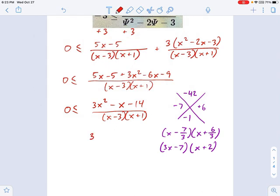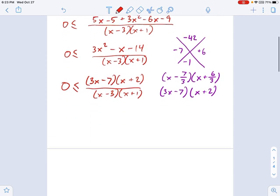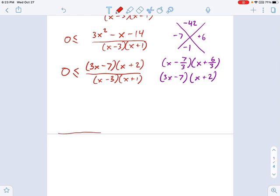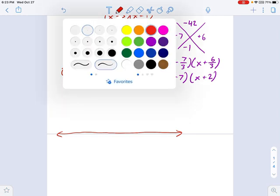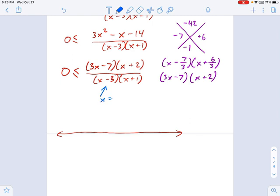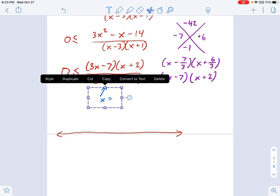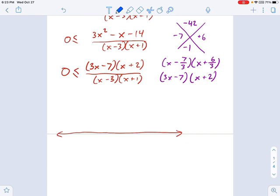So the result is I get 3x minus 7 times x plus 2 on the top, and on the bottom I have x minus 3 and x plus 1. And that whole factored rational is greater than or equal to 0. So now I'm ready for a sign array. So let's just build one right here. And you look at all the vertical asymptotes or intercepts. So let's do vertical asymptotes in blue. Our vertical asymptotes are going to be x equals 3 and x equals negative 1.